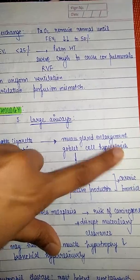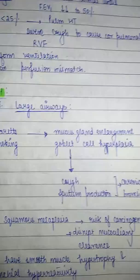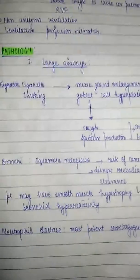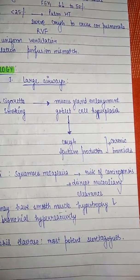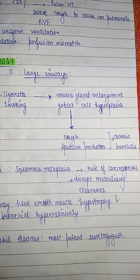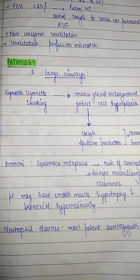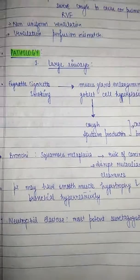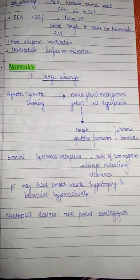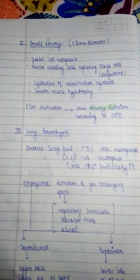Pathology in large airways: cigarette smoking causes mucus gland enlargement and goblet cell hyperplasia, leading to cough and sputum production — this is called chronic bronchitis. In the bronchi, squamous metaplasia imposes the risk of carcinogenesis and disrupts mucociliary clearance. Patients may have smooth muscle hypertrophy and bronchial hyperreactivity. Neutrophil elastase is the most potent secretagogue.